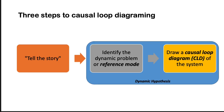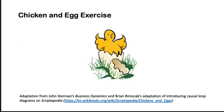The combination of the reference mode and the causal loop diagram is a dynamic hypothesis — a hypothesis being that the causal loop diagram we have drawn can explain the patterns of interest in a reference mode. Next, we'll do a chicken and egg exercise to illustrate how we draw causal loop diagrams.